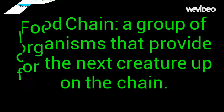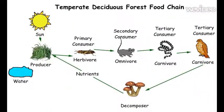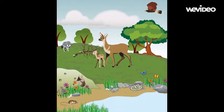A food chain is a group of organisms that provide food and nourishment for the next creature up on the chain, including your producers, consumers, secondary consumers, decomposers, and more. With your understanding of how an ecosystem works, we can now look at the theory of the trophic cascade.